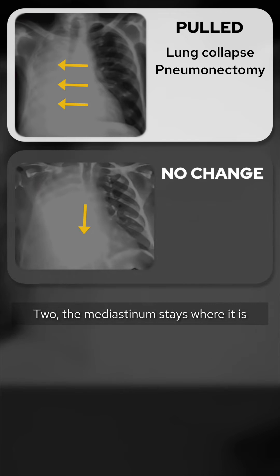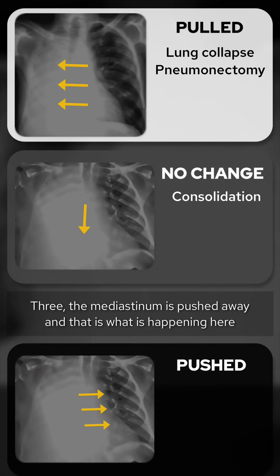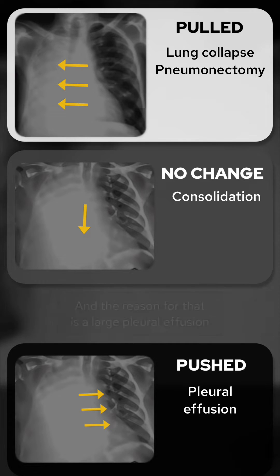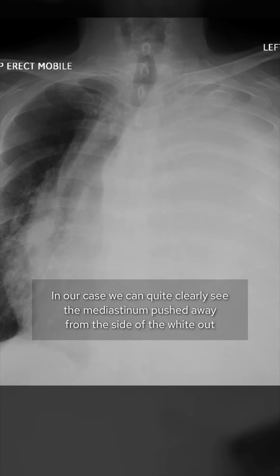Two: the mediastinum stays where it is. This happens in lung consolidation, most of the time due to pneumonia. Three: the mediastinum is pushed away, and that's what's happening here, and the reason for that is a large pleural effusion.